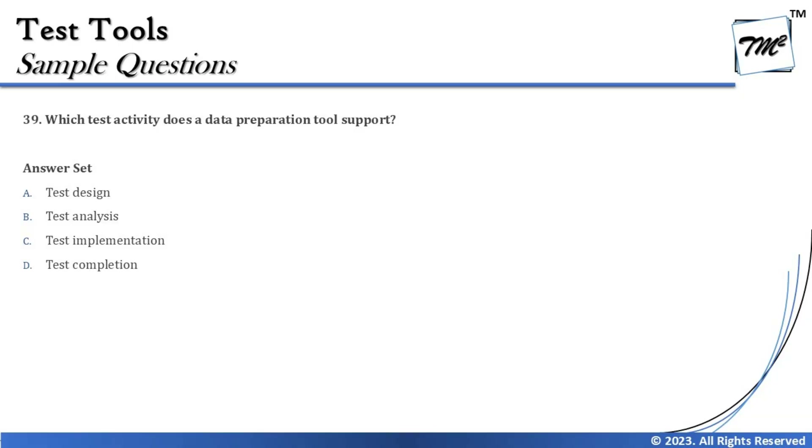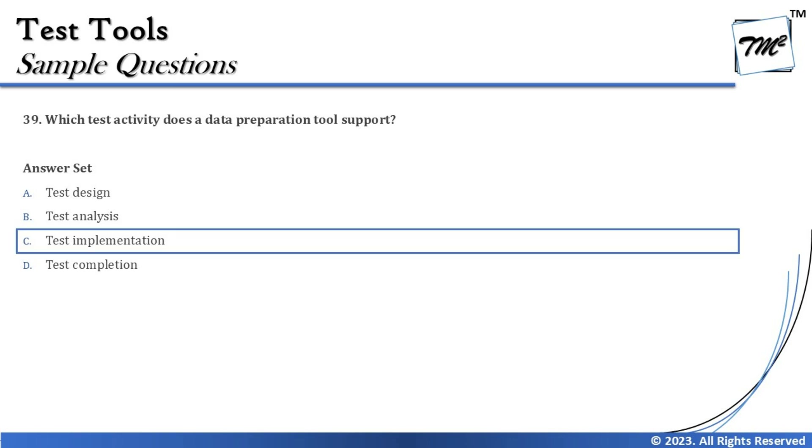That's where most people will say 'test design' and go wrong. Please be careful — every single word in the syllabus highlights the difference between these activities. The correct answer for this question is C — test implementation — the phase where a data preparation tool is used. Knowledge of chapter one in detail makes this simple.